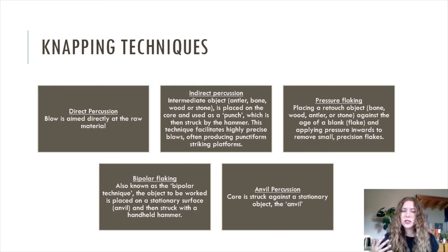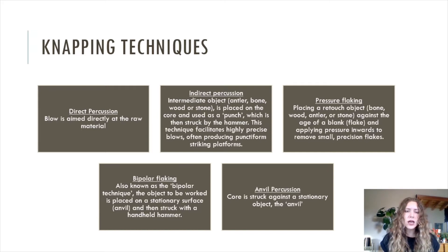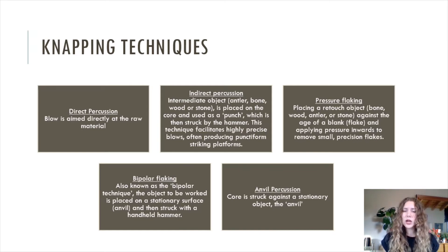There are different methods of napping that fall within these categories. Pressure flaking is when you place a retouched object such as bone, wood, antler, or stone against the edge of a flake or blank, and apply direct pressure inward to remove small precision flakes — this is how you make very precise tools such as arrowheads. Bipolar flaking, also known as the bipolar technique, is when the object to be worked is placed on a stationary surface and then struck with a handheld percussor, distributing the force differently. Anvil percussion, the most basic, is when the core is just struck directly onto a stationary object — the anvil.